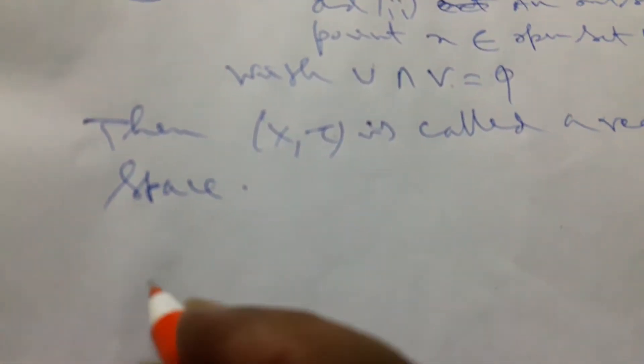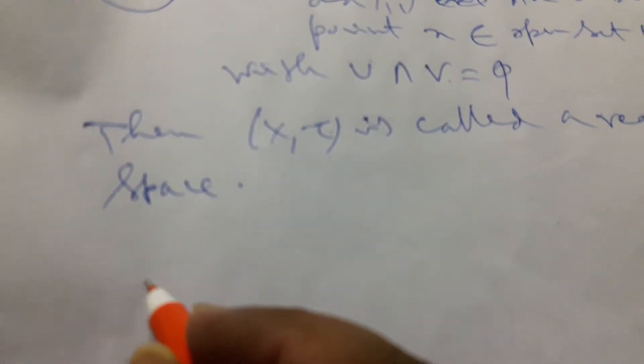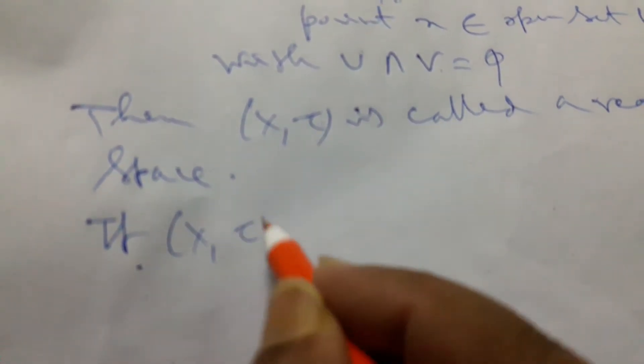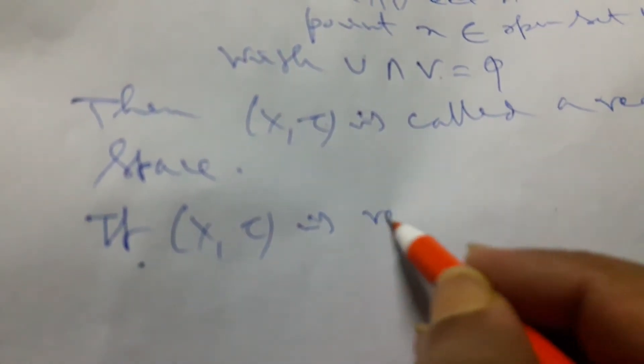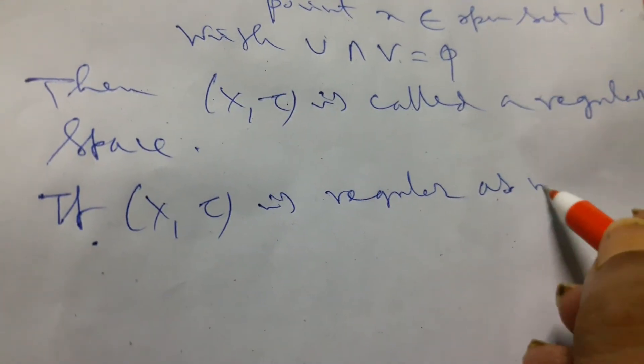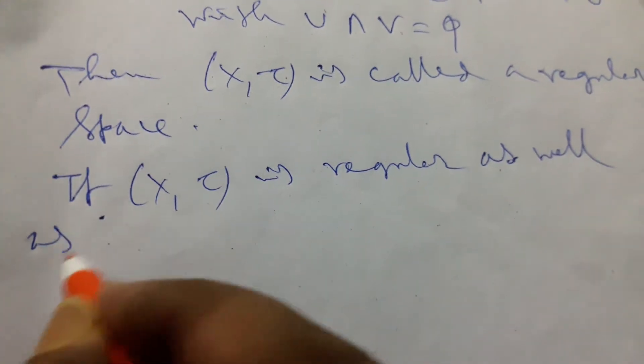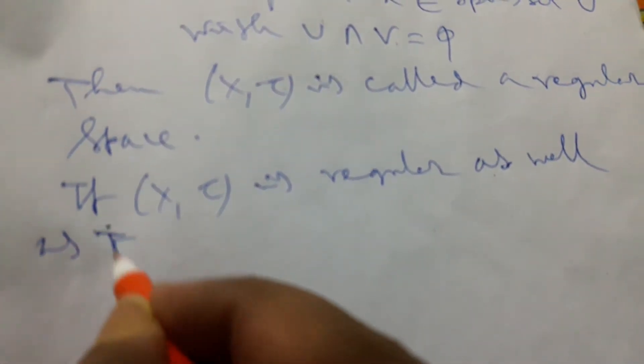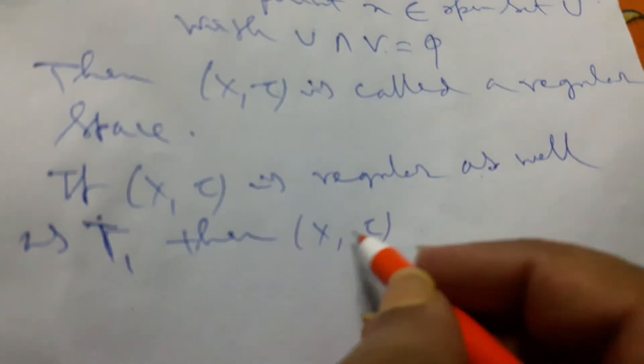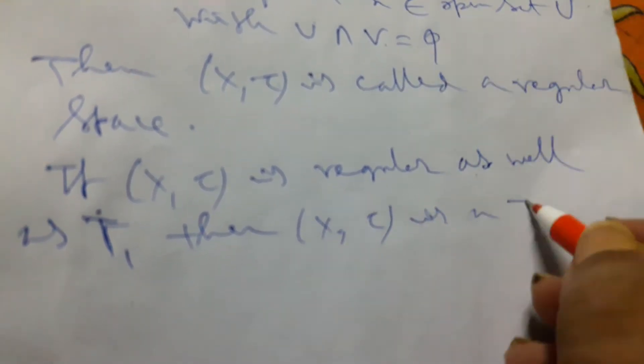T3 space: now if we consider this regular space, if x tau is regular as well as T1, then x tau is T3 space.